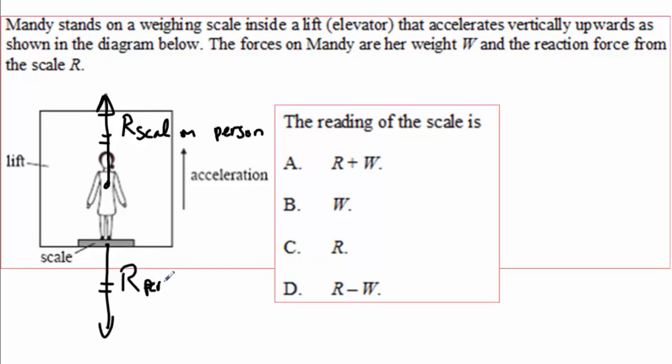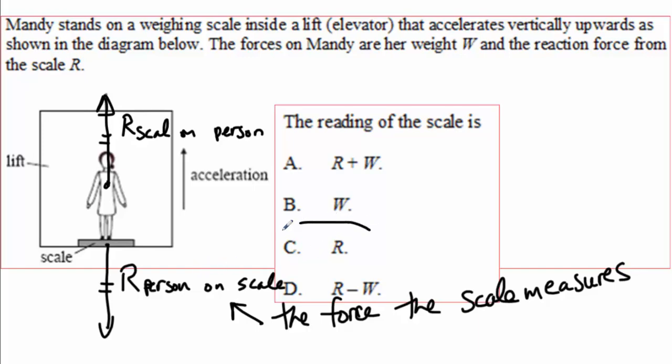So this would be the force of the person on the scale. And of course it's the force of the person on the scale. That's the force that's squeezing our scale. It's this force here that the scale is measuring. That's the force squeezing the scale. And the more it gets squeezed, the bigger the reading on the scale. Which is to say, the correct answer here is C. The reading on the scale will be R.